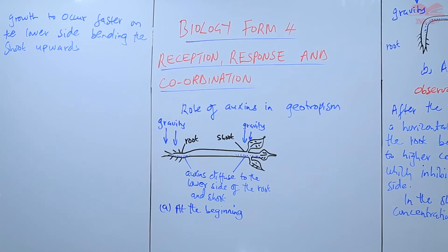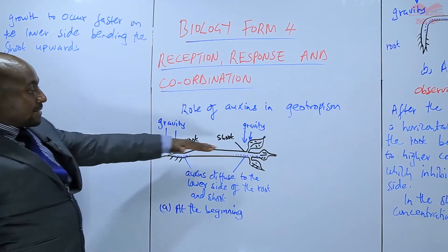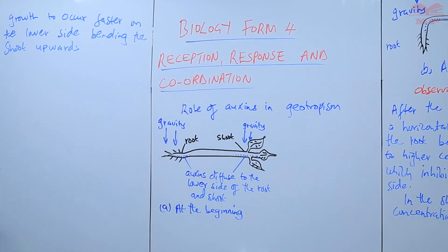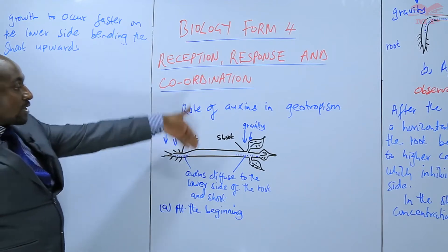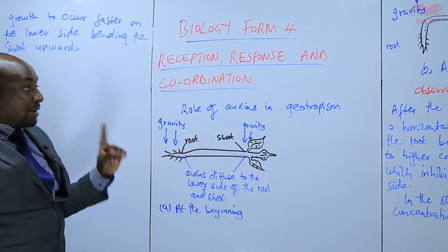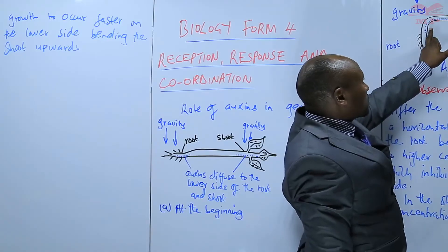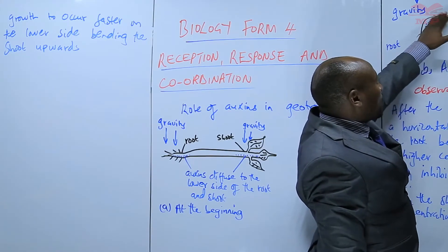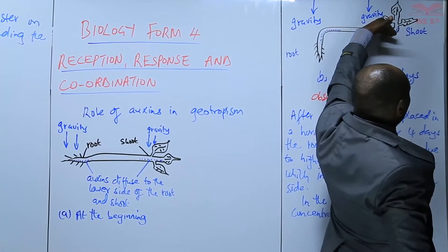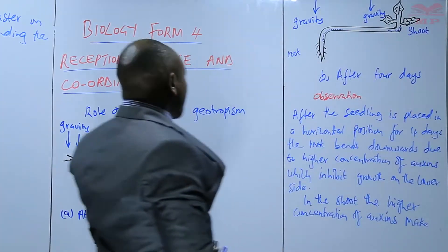That is how you can investigate the role of auxins in geotropism — by placing a seedling in a horizontal position so that the effect of gravity is felt. The auxins move to the lower side. After a few days, the root side with high auxin concentration grows less, and the shoot side with high concentration grows more, so the shoot bends upwards as the root bends downwards.